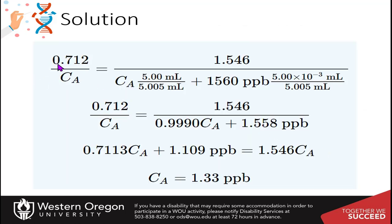So we just have that sample signal again, over Ca. And this is going to be the signal of the spiked sample. And then you've got our concentration of the blood sample, and then the blood sample plus the standard.